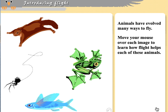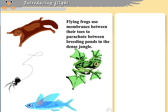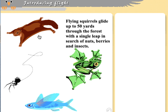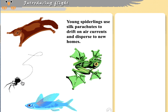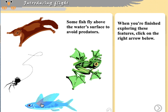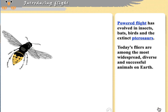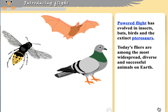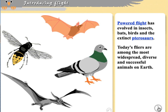Here we see a group of organisms that might fly or glide in a limited manner — flying frogs, flying squirrels, spiderlings that can parachute, and flying fish. If we think about flight in the sense of birds, we might think about powered flight. Powered flight has evolved in four separate groups: insects, bats, birds, and pterosaurs.